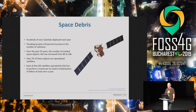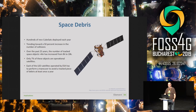Space debris is a potential problem. When CubeSats reach the end of their lifespan in low Earth orbit, their orbits degrade and they burn up in the atmosphere — so the debris itself isn't the main issue. But while they're up there, they create obstacles for other satellites. Each LEO satellite operated by ESA has to perform a collision-avoidance maneuver at least once a year, and this will become a major problem as nanosatellite numbers increase.